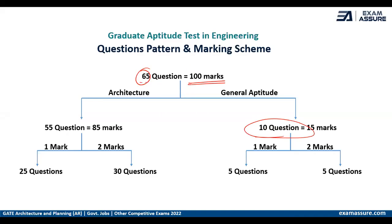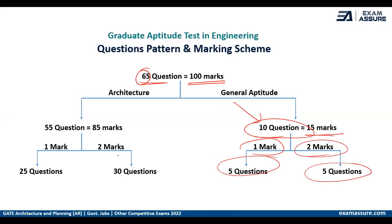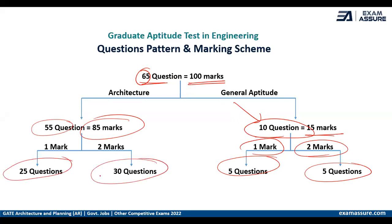Let's start with this scheme. It's 65 questions total — 10 questions are from general aptitude, which consists of 15 marks. Five questions are one-mark questions and five questions are two-mark questions. The other 85 marks come from 55 questions from hardcore architecture, also divided into two parts: 25 questions are one mark and 30 questions are two marks.